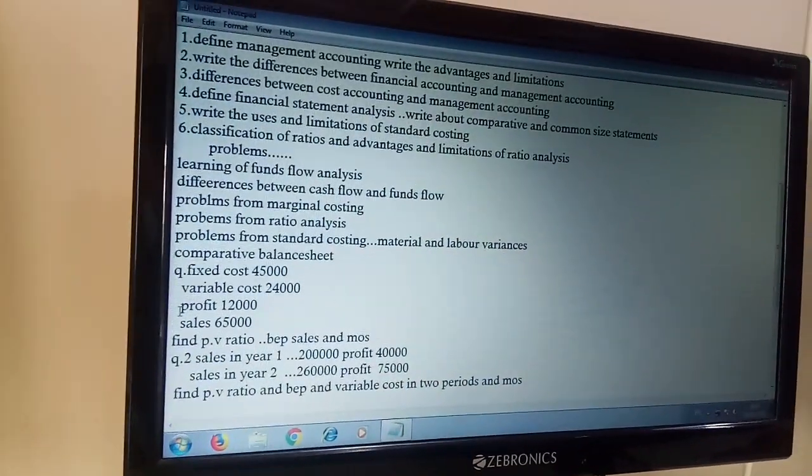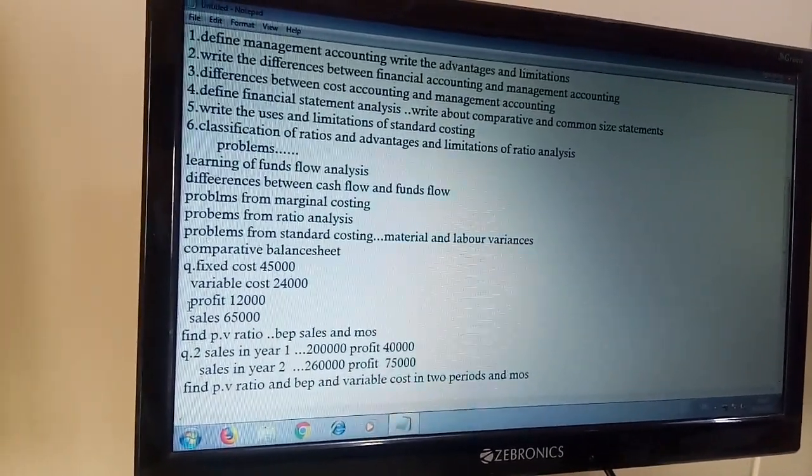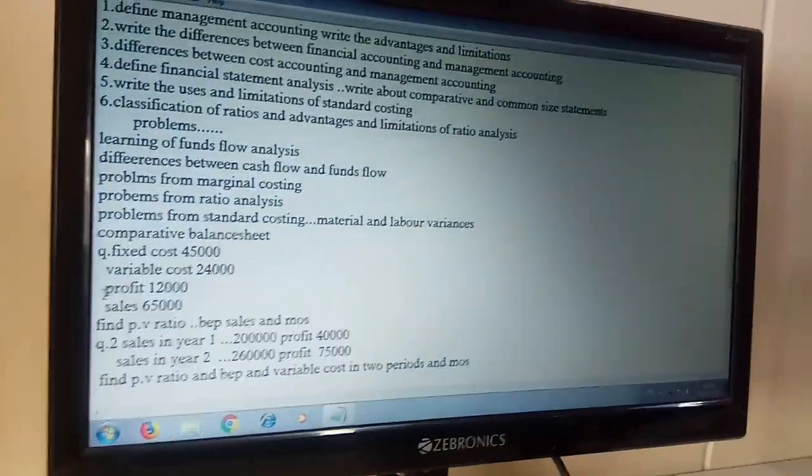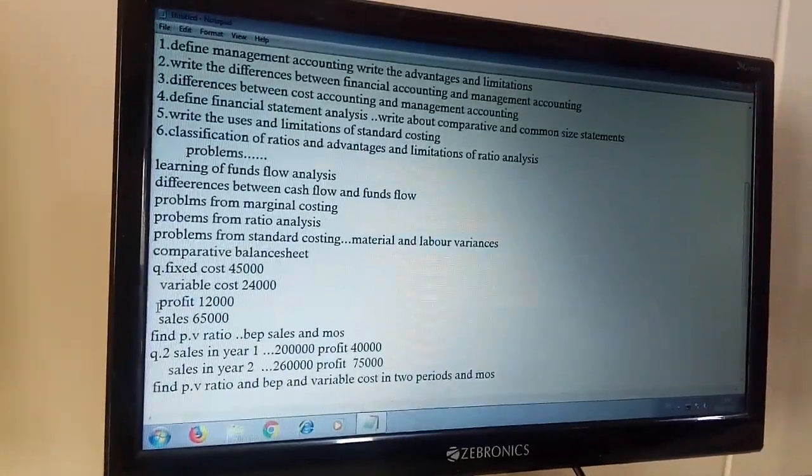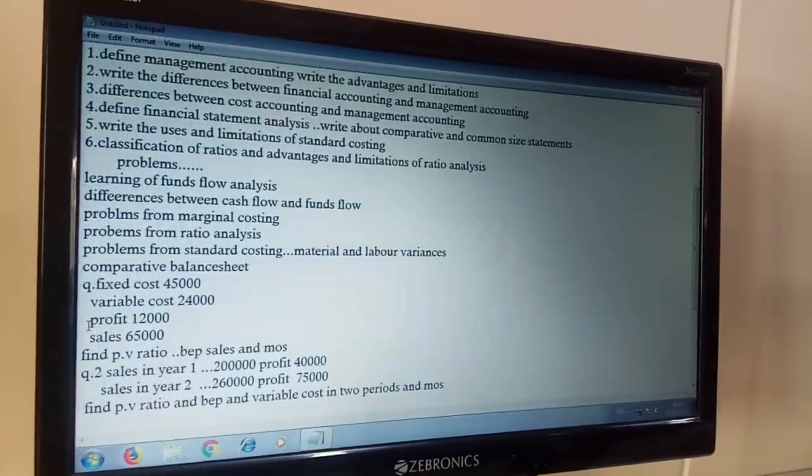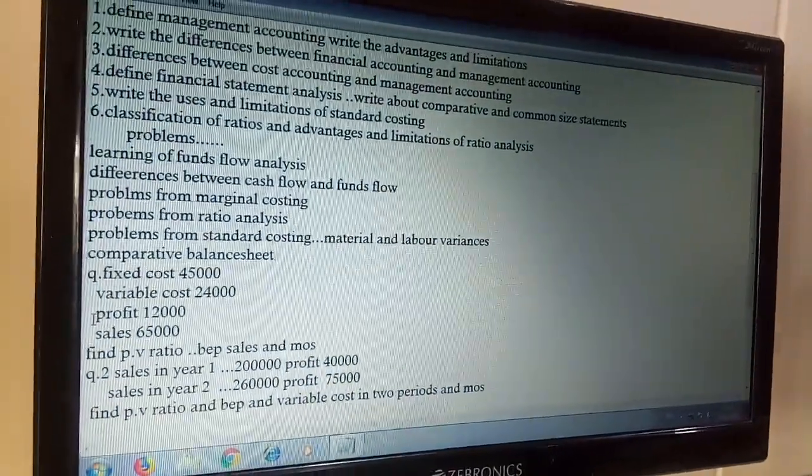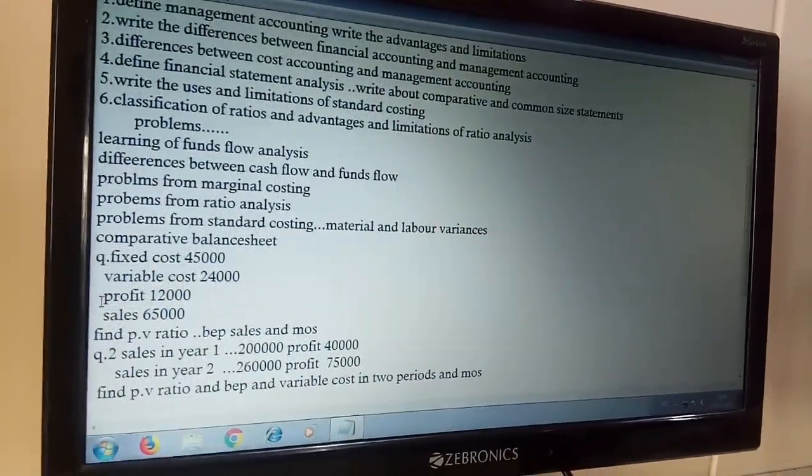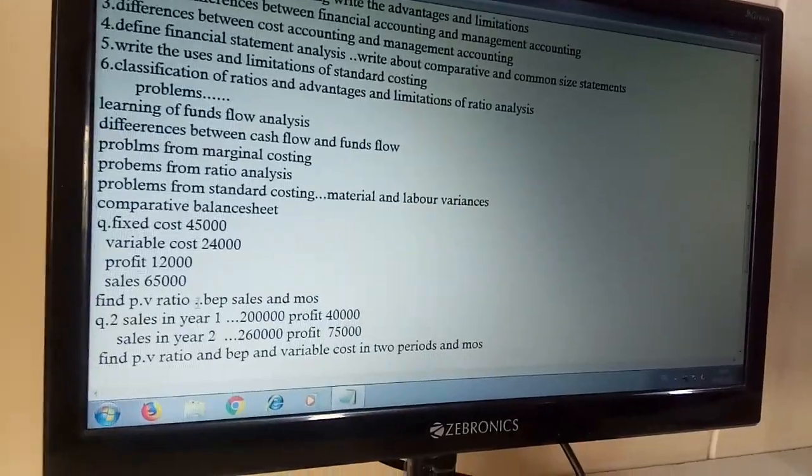PV ratio is equal to contribution by sales into 100. Contribution is equal to sales minus variable cost. And the BEP sales means fixed cost by PV ratio or fixed cost divided by sales minus variable cost into sales. No problem.